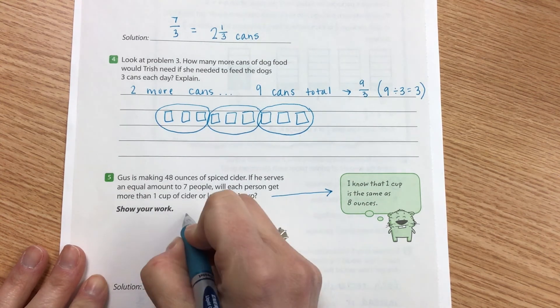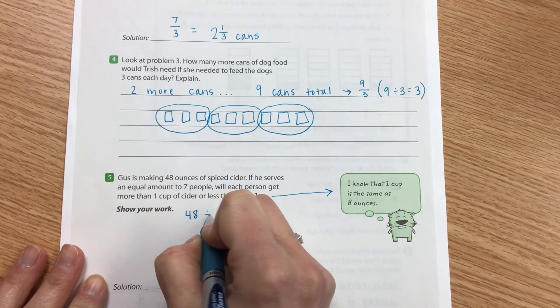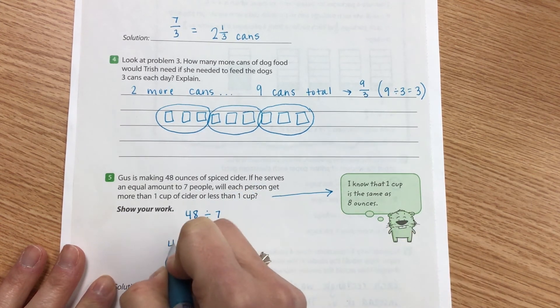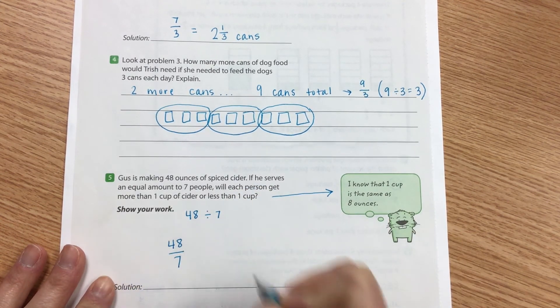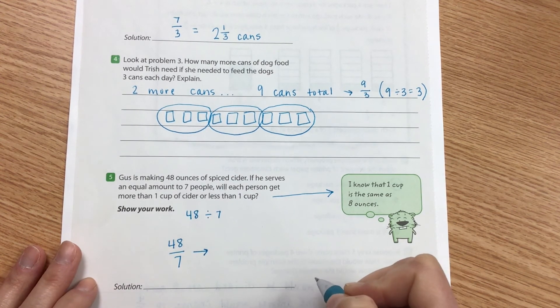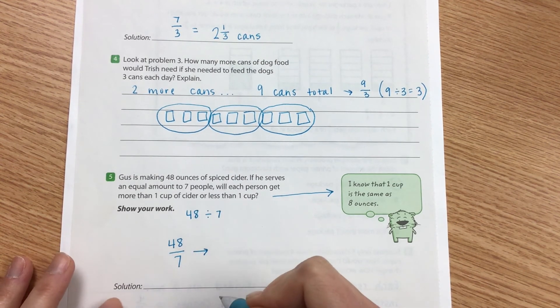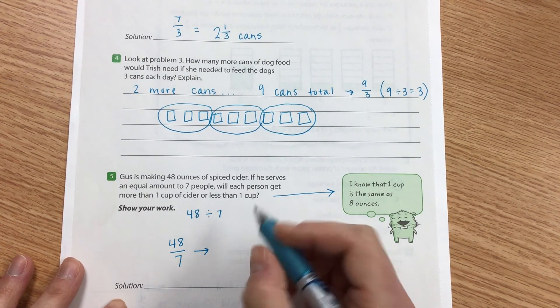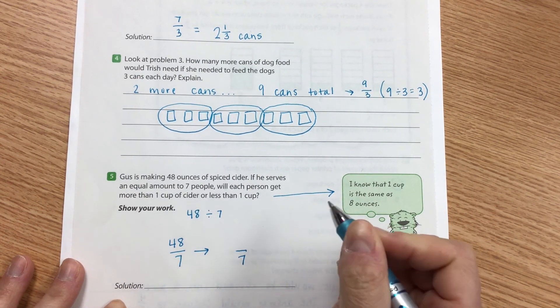So I'm going to take my 48 and divide it by seven. So I'm going to put 48 over seven and I'm going to change it into a mixed number, right now it's in an improper fraction form. So I'm going to leave my denominator as a seven.